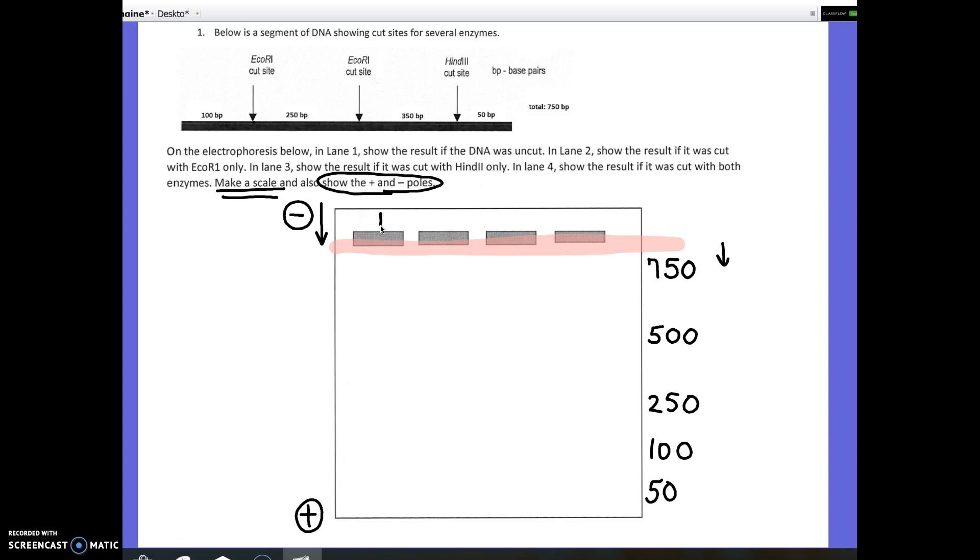All right. In lane one, they want us to show the results if we loaded DNA that was not cut at all. So, I load my DNA, and I know that my piece is 750 base pairs long, so at the end of my electrophoresis, I should basically just have one band that's 750 base pairs long. It would have been big and heavy, and it wouldn't have traveled very far.